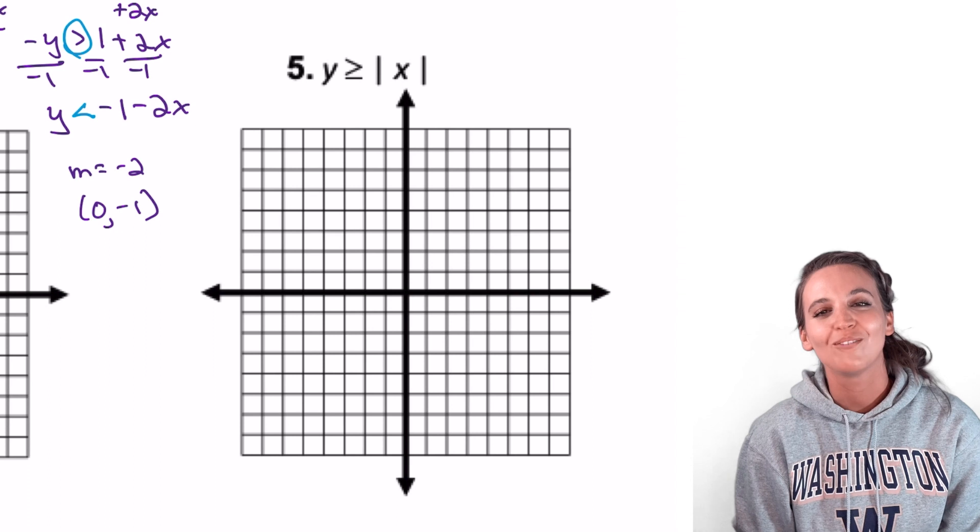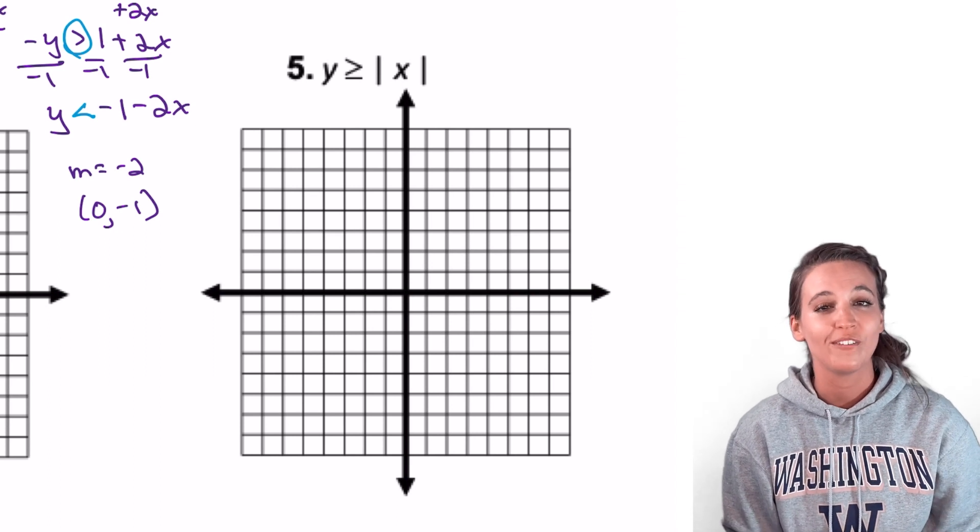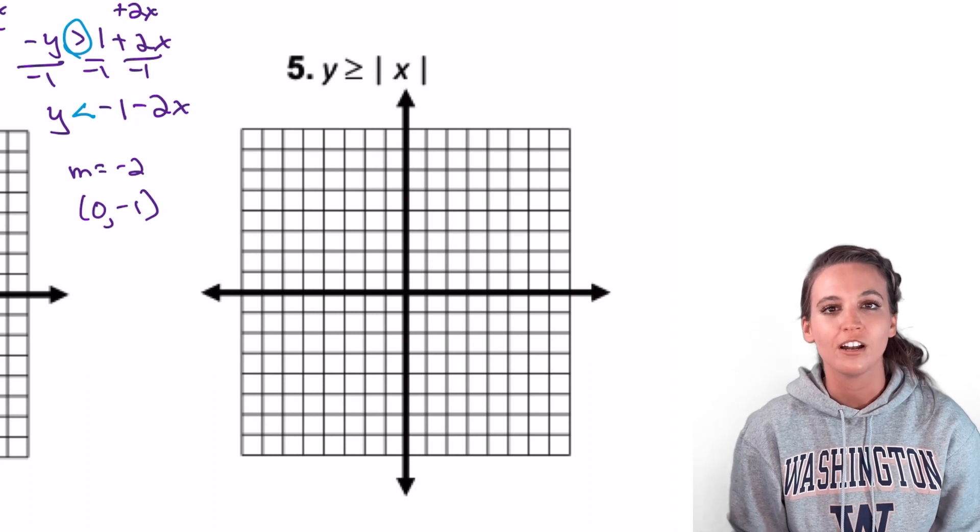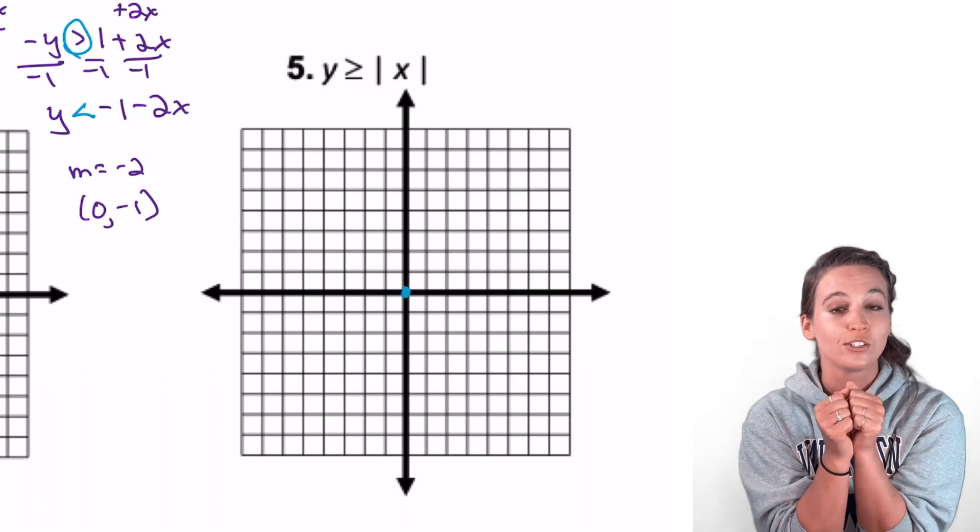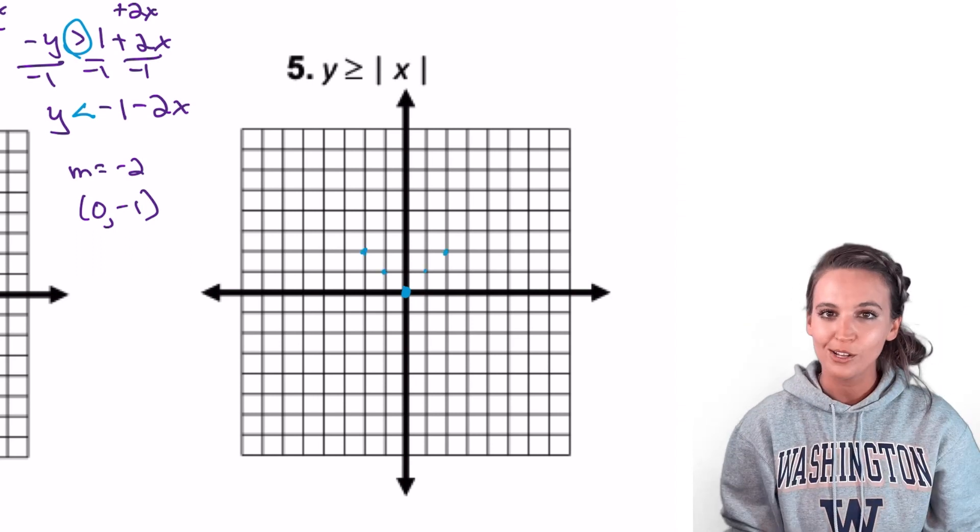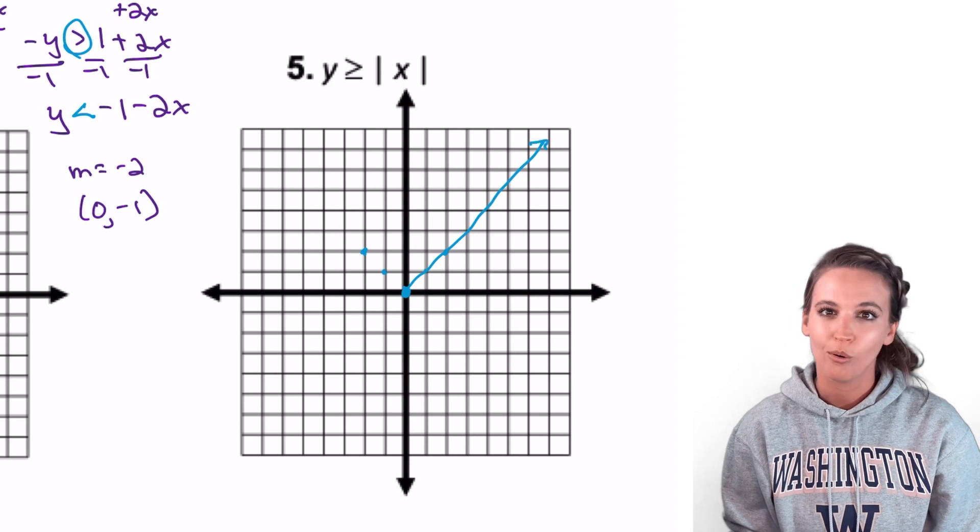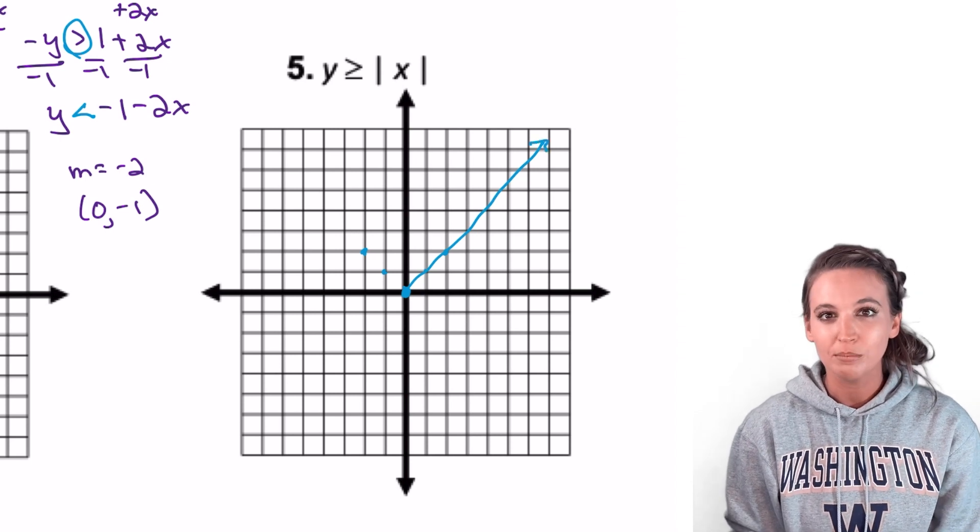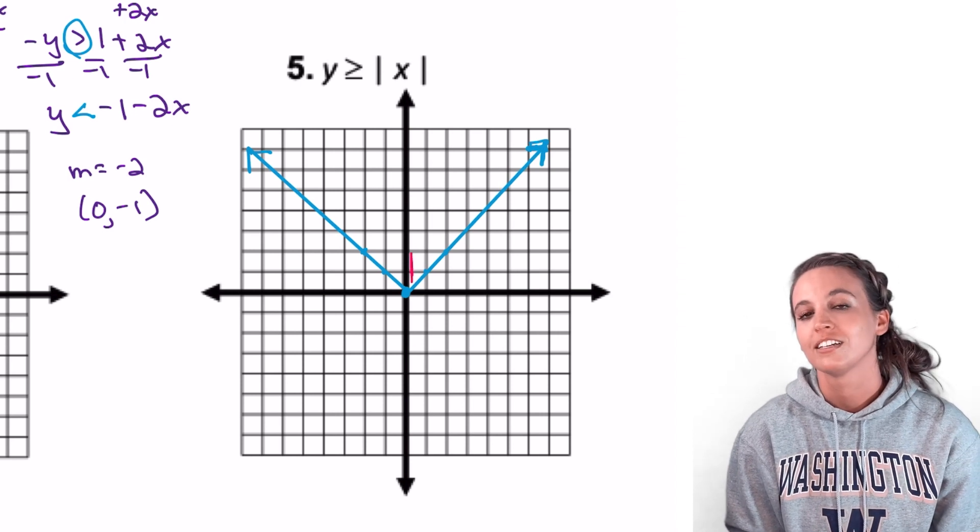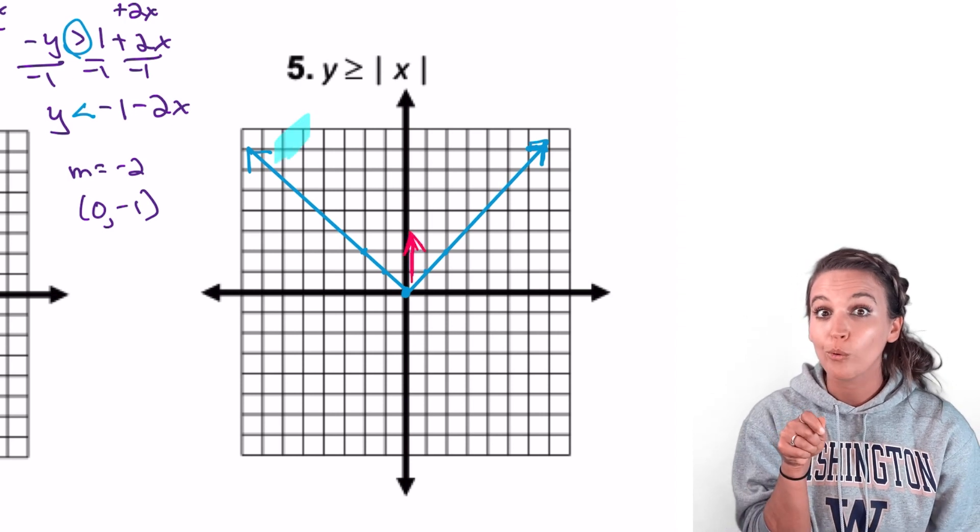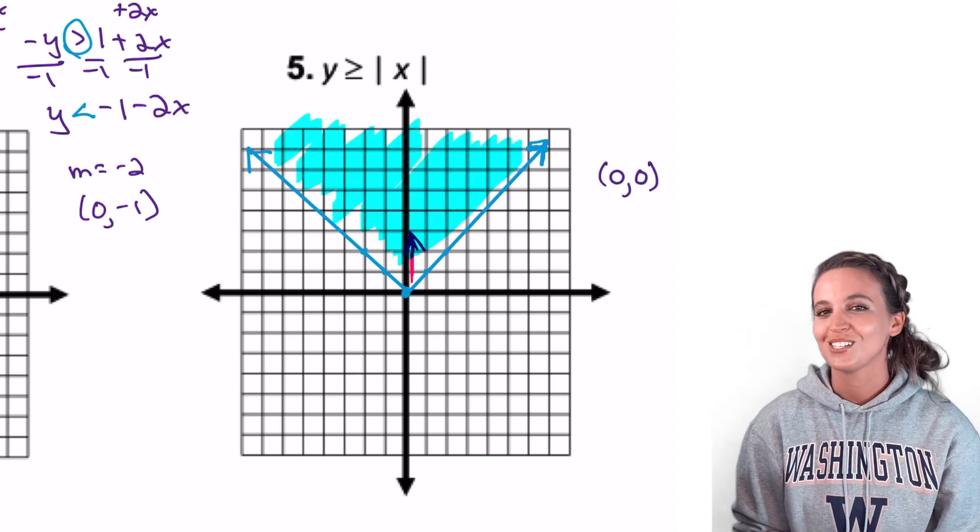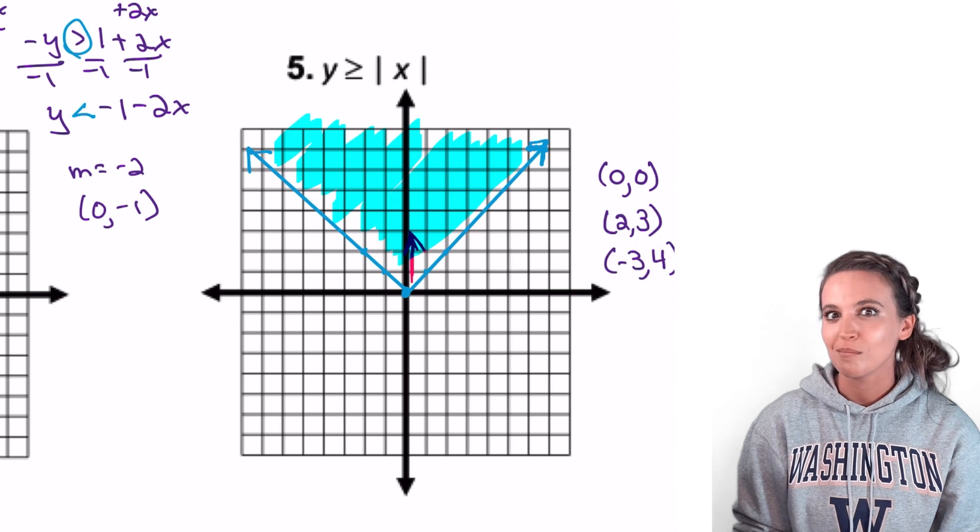Wow, look at this next one. We have y is greater than or equal to the absolute value of x. So we're going to graph y equals the absolute value of x. It's just the parent function of the absolute value graph. So vertex of 0, 0, over 1, up 1, back to the vertex, over 2, up 2, and so on. Am I going to make a solid line or a dashed line? Well, solid because it's greater than or equal to. Are we going to shade above or below this v? We'll go to the y-intercept greater than, so everything above that y-intercept. Now be sure to state three solutions in your solution set. This time they can be directly on the graph.